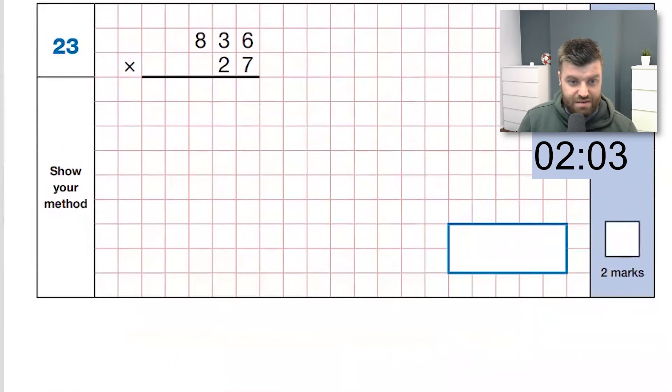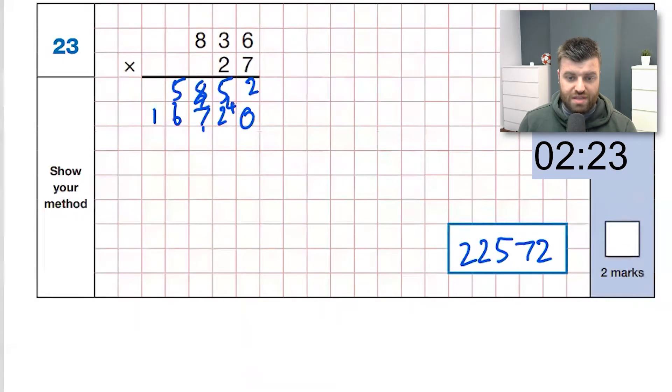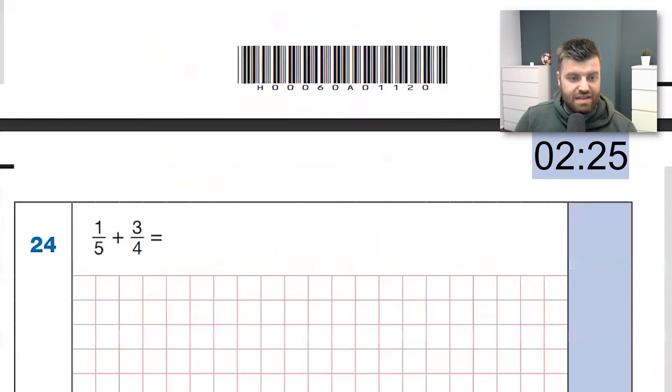23, we've got to write this down. Seven sixes are 42. Seven threes are 21, plus the four is 25. Seven eights are 56. That's going to be 58 with the exchanging. Put a placeholder in. Two sixes are 12. Two threes are six, plus the one is seven. Two eights are 16. I'm going to add it straight into the box. Two ones, seven tens, 15, 100, so exchange over 12,000, so exchange over 22,572.